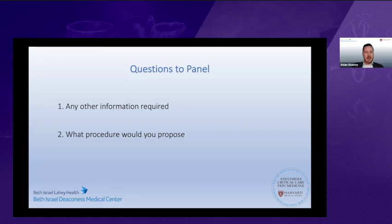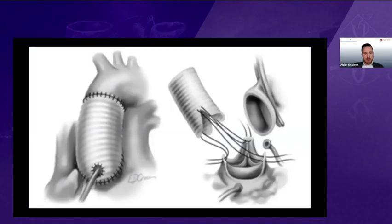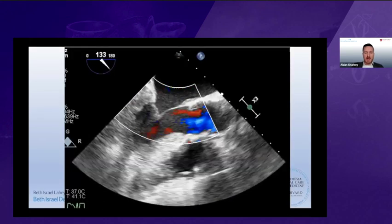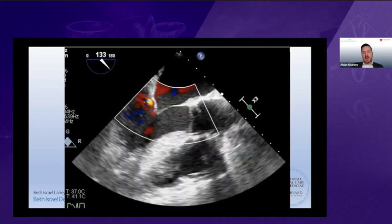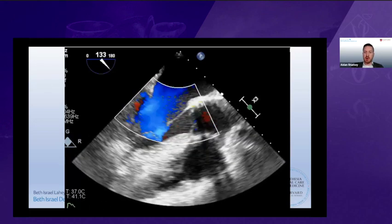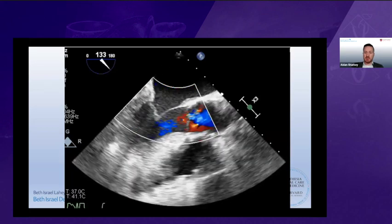The patient went on to have a valve-sparing procedure, also known as the David procedure, which was pioneered at Toronto General Hospital. This patient had a very good outcome with trivial aortic insufficiency at the end of the procedure.